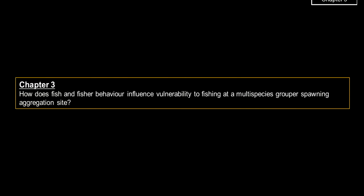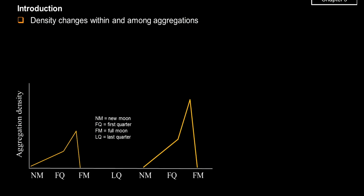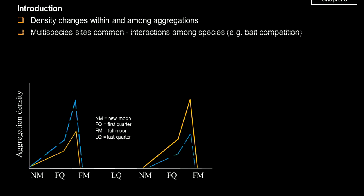Turning to chapter 3 — here I look at a multi-species group of spawning aggregation sites and aspects of fish and fisher behavior and how they influence vulnerability. Previously I was looking at density changes between non-spawning and spawning habitats; now I'm looking at density changes within the spawning site itself. For groupers these can be particularly extreme — two weeks before spawning there are none present, then numbers increase rapidly, with a real peak around a week before spawning as females arrive. These are often multi-species spawning sites with up to three or four species of groupers aggregating at the same site, so there will be interactions among species for baited gear — some will be better competitors than others.